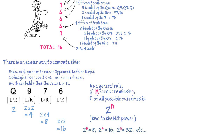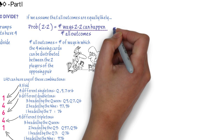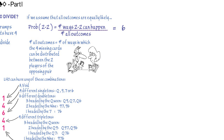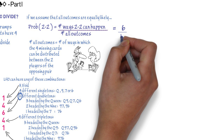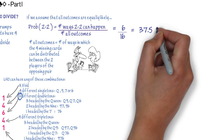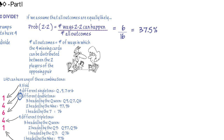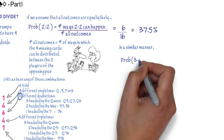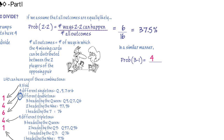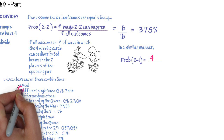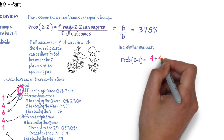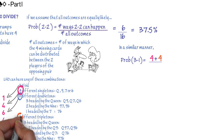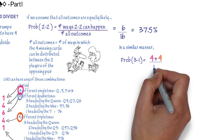Additionally, we can see that the number of ways a 2-2 distribution can happen is the number of doubleton combinations — that is, 6 divided by 16, which equals 37.5%. In a similar manner, the probability of a 3-1 or 1-3 distribution is the number of different singletons (4) plus the number of different tripletons (also 4), giving us 50%.